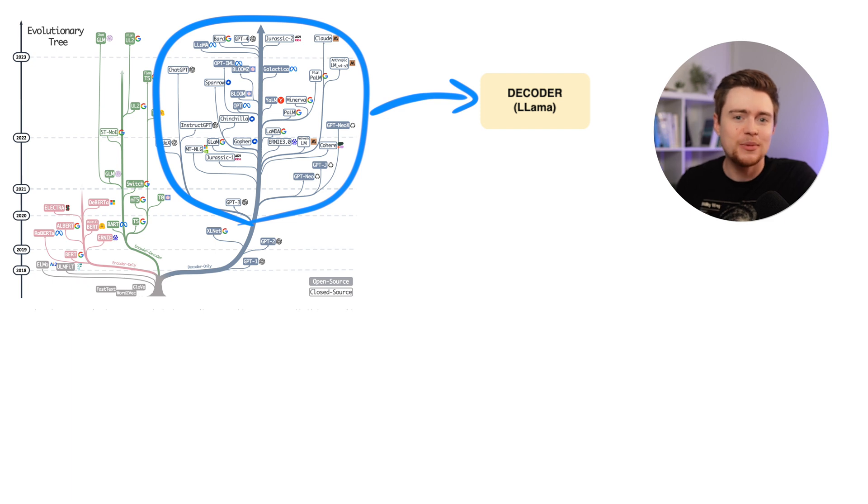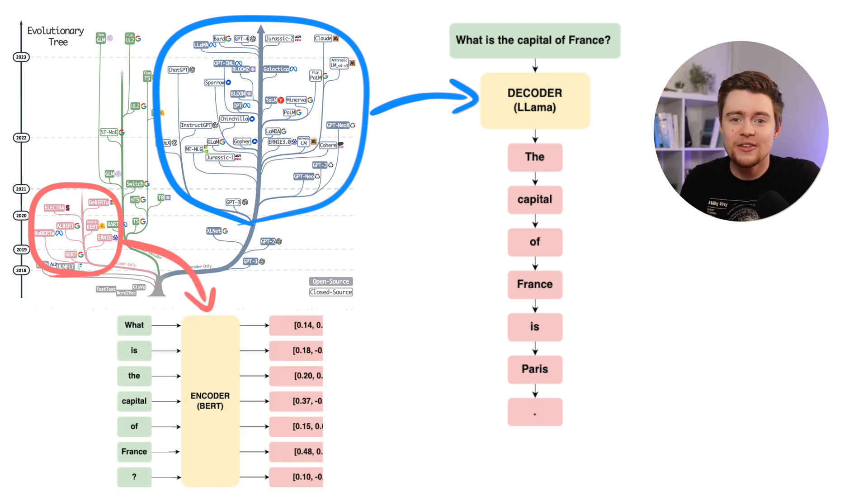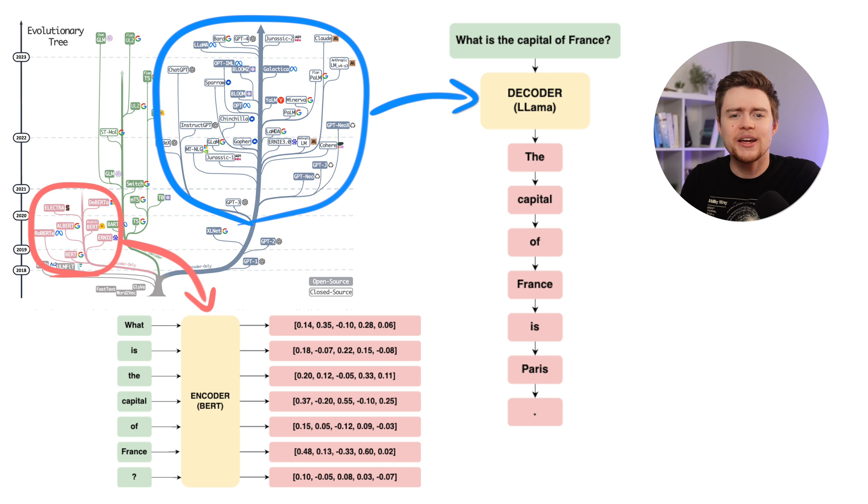Models like GPT or LLaMA take some input and generate output one token at a time in an autoregressive manner. But there are also other architectures like encoders. Encoders are models that take some text and generate a meaningful representation of that input, capturing its semantic and syntactic properties. This representation is not text - it's actually a numerical vector that can be used for other downstream tasks.